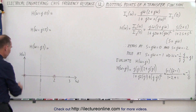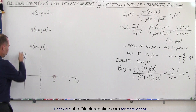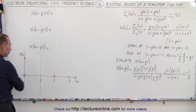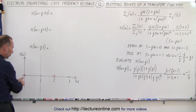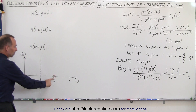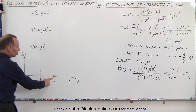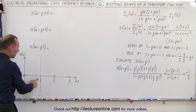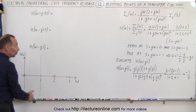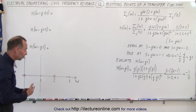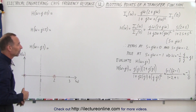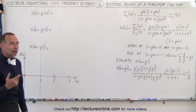Now we can already plot some of these points. Here we have a graph where on the vertical axis we have the transfer function as a function of ω. Notice that when ω equals zero we had a zero, when ω equals two we had a zero, and when ω equals one we had an asymptote, because the transfer function becomes infinite at that point.